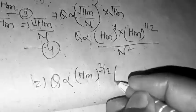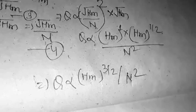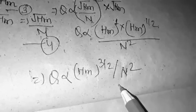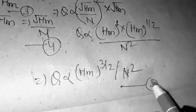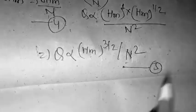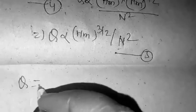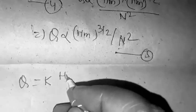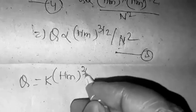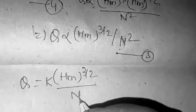Q is directly proportional to HM to power 3 by 2 upon N square. Now removing the sign of proportionality by introducing a constant, Q is equal to K HM to power 3 by 2 upon N square.